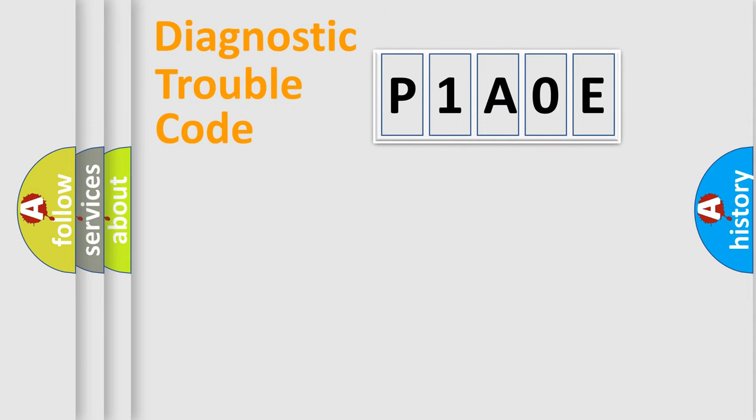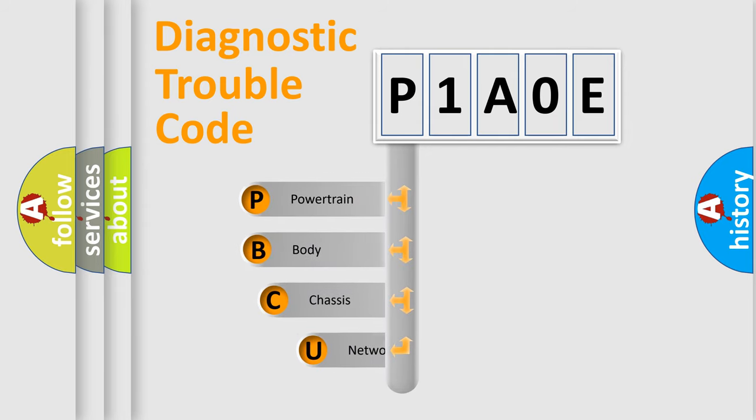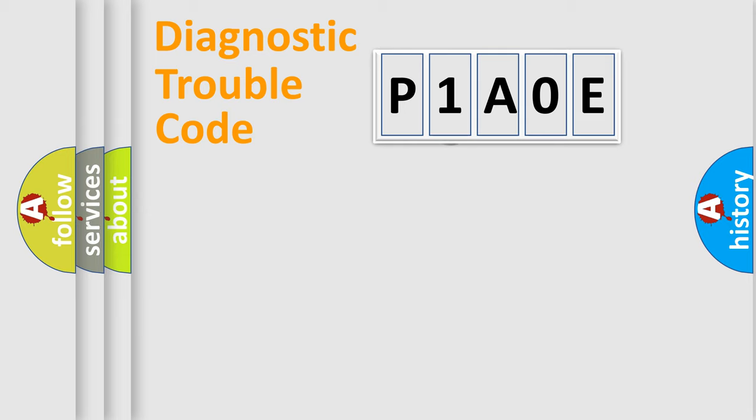First, let's look at the history of diagnostic fault code composition according to the OBD2 protocol, which is unified for all automakers since 2000. We divide the electric system of automobile into four basic units: Powertrain, Body, Chassis, Network. This distribution is defined in the first character code.